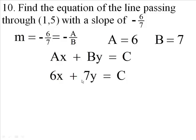So this is an equation right here that has a slope of negative 6 7ths. Now I haven't used the point yet, the point says that x is 1 and y is 5, so that's going to help me determine what C is. When x is 1, we're going to put a 1 in here. When y is 5, we're going to put a 5 in here, and we're going to solve this for C.